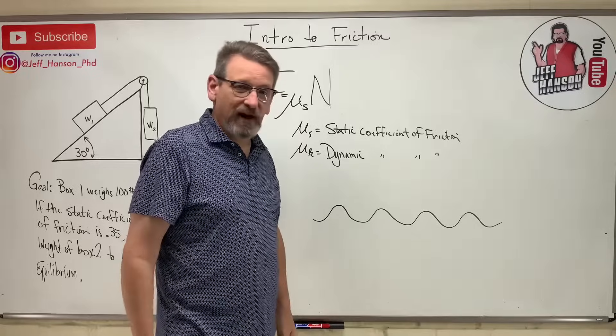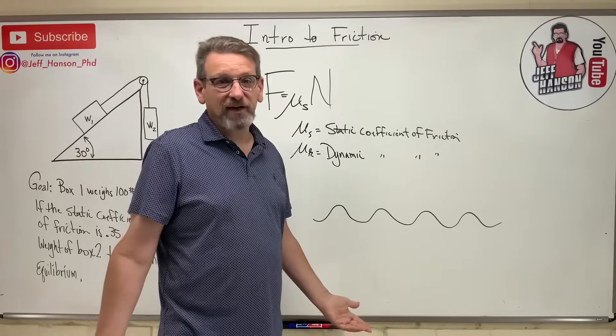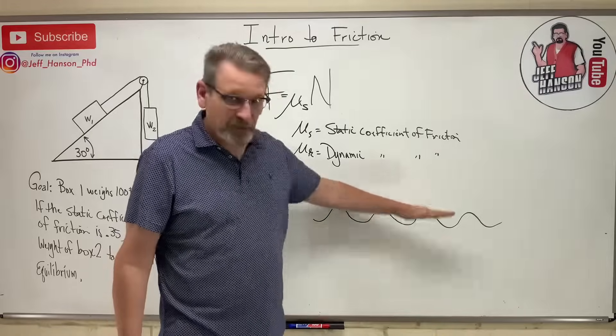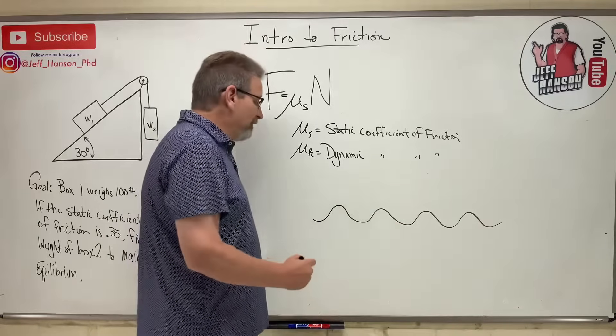We call this a washboard road because it looks like the old-fashioned washboards. Well, if you drive your truck down this road, it'll shake your teeth out as you're going over those bumps, right? So how do you smooth that out? Well, you just drive 70 across the bumps. So that way the tires only hit the tops and they just kind of skip across the tops.